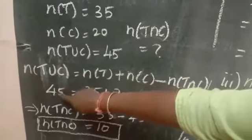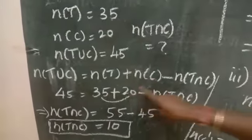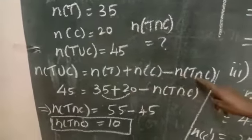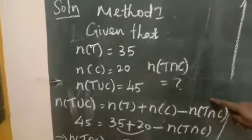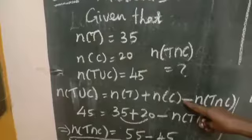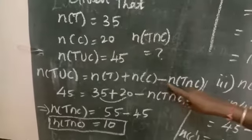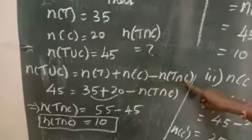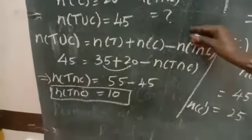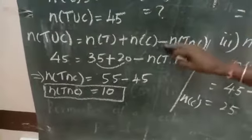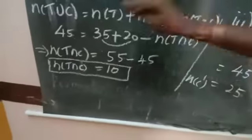Now we substitute the values into the formula. T union C means 45, N of T is 35, N of C is 20. We have to find out N of T intersection C. In this formula we have minus N of T intersection C, so we separate this term.